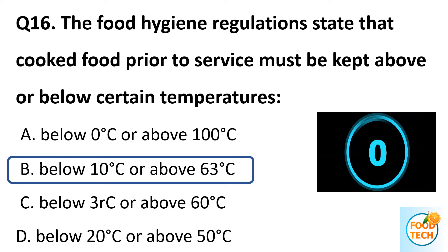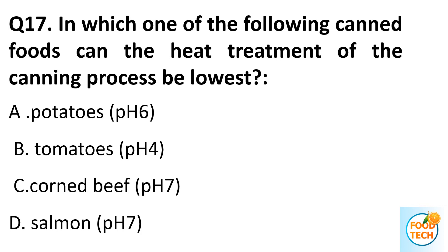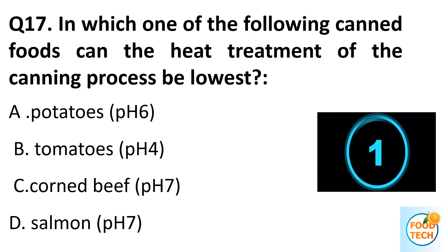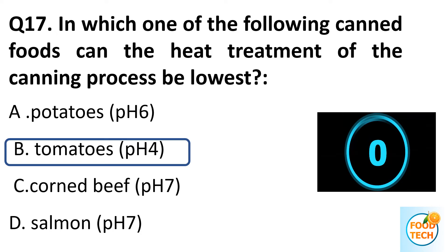Question 17. Which of the following canned foods can be heated at the lowest treatment in the canning process? A. Potatoes. B. Tomatoes. C. Corned beef. D. Salmon. Answer B. Tomatoes, pH 4.